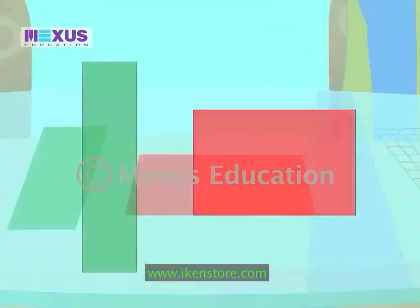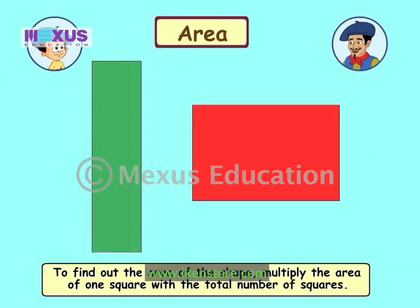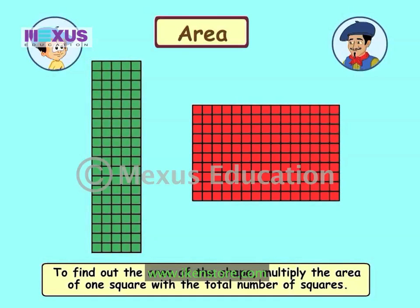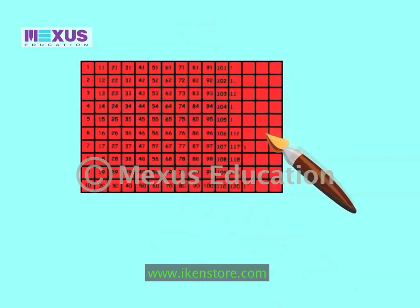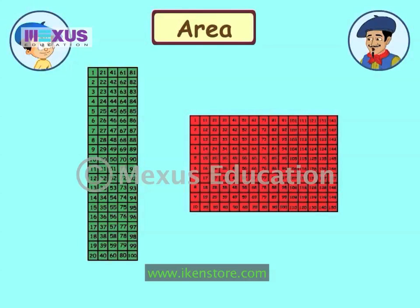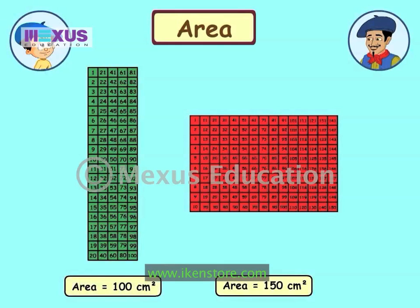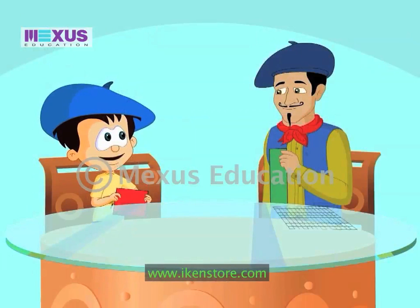Getting back to these shapes we have, let's place the graph paper on these shapes and count the squares occupied by the figure. If we multiply the number of small squares with the area of one square, we can get the area of the whole figure. The red rectangle completely covers 150 squares on the graph sheet, so its area is 150 square centimetres. The green one covers 100 squares, so its area is 100 square centimetres. So the red one is bigger.